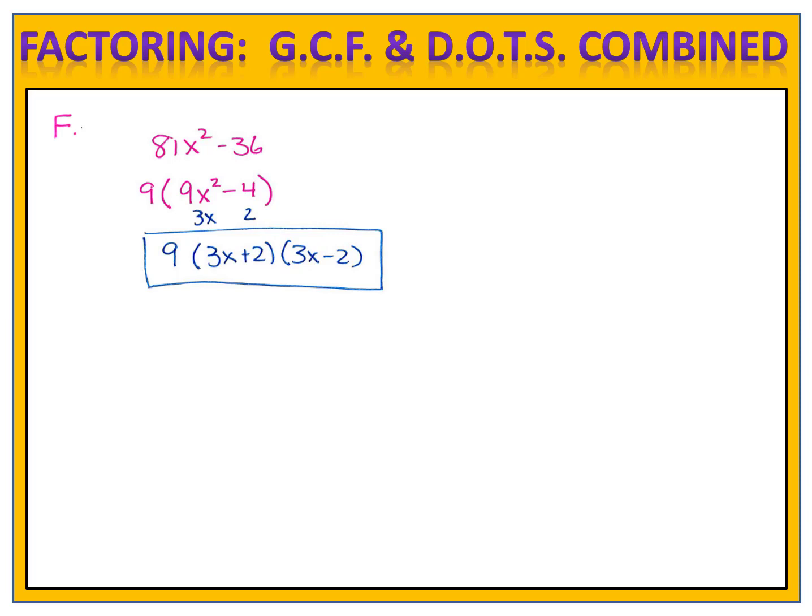And we can factor that into 3x plus 2 and 3x minus 2. And of course we'll bring down the 9, which was the greatest common factor from earlier in the problem. But what if you took a different approach? What if you saw 81x squared minus 36 and instantly thought this is a difference of two perfect squares? 9x times 9x gives me 81x squared, and 6 times 6 gives me the 36.